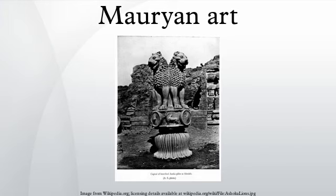Mauryan art encompasses the arts produced during the period of the Mauryan Empire, which was the first empire to rule over most of the Indian subcontinent. It represented an important transition in Indian art from use of wood to stone. It was a royal art patronized by Mauryan kings, especially Ashoka. Pillars, stupas, and caves are the most prominent examples.